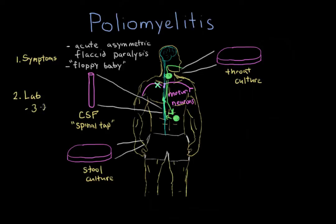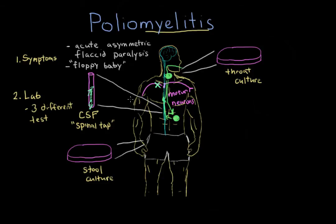Any of these three tests will work. The cerebrospinal fluid is the most accurate — if you can find the poliovirus isolated in the CSF, that confirms the diagnosis of poliomyelitis. As a reminder, 'myelitis' means inflammation in the spine. Because the virus can also be shed through the mouth and in the feces, you can collect stool cultures or throat cultures as well. Stool cultures are one of the cheapest methods and are more accurate than throat cultures, so they are fairly commonly used.